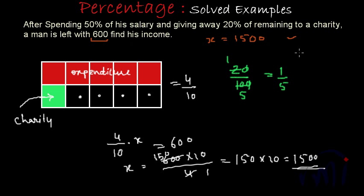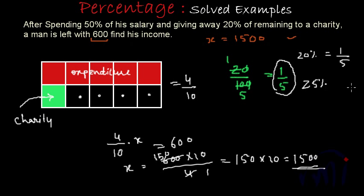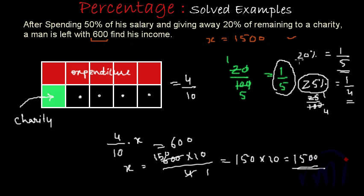Sometimes it is very easy: if you are asked to find 20% of something, you can directly find 1 fifth of that thing, because 20% is nothing but 20 by 100, which equals 1 by 5. Similarly, 25% of something equals 1 by 4, because 25 by 100 simplifies to 1 fourth. And 50% equals half. If you are preparing for a competitive exam, remember the fractional values: 20% is 1 fifth, 25% is 1 fourth, and 50% is half. So this was all for today, bye-bye.